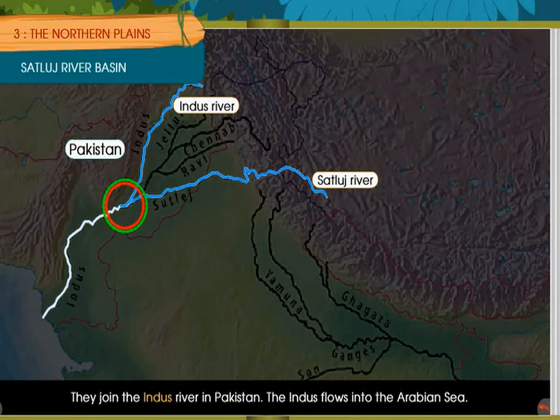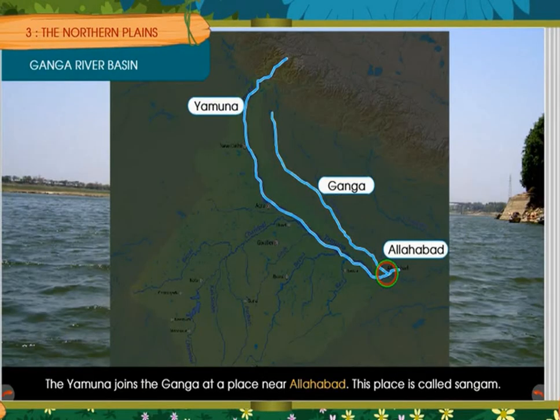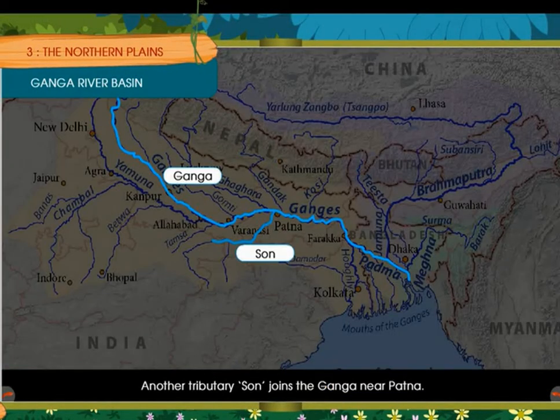The Indira Gandhi Canal provides water to the state of Rajasthan. In the Satluj Basin, crops such as wheat, paddy, cotton and sugarcane are grown.